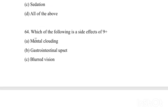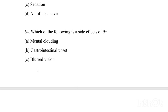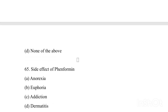Which of the following is a side effect of opium? Option A: Mental clouding. Option B: Gastrointestinal upset. Option C: Blurred vision. Option D: None of the above. Answer is Option C, Blurred vision.